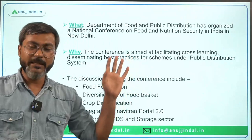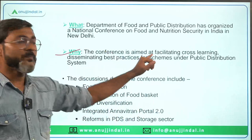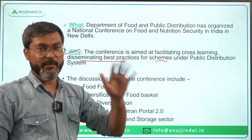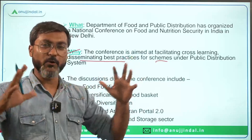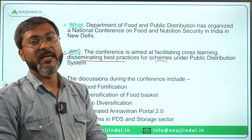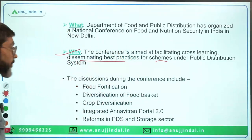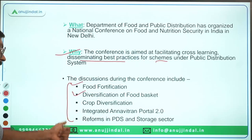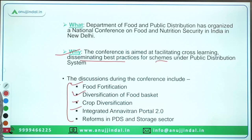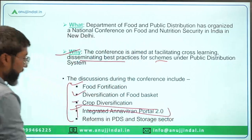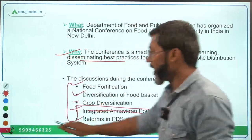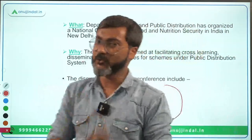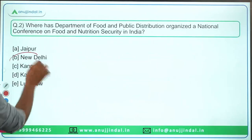This conference was organized in New Delhi, with the aim to facilitate cross-learning and disseminating best practices for schemes under the Public Distribution System. The key areas of discussion included food fortification, diversification of food basket, crop diversification, integrated portal, and reforms in PDS and storage sector. The correct answer is option B — New Delhi.